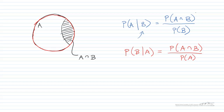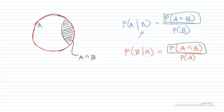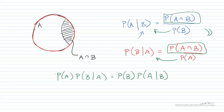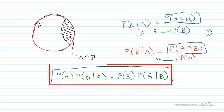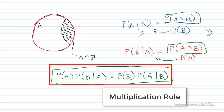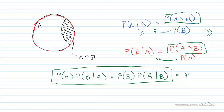Now look what happens if I isolate the intersection that's in the numerator on both right-hand sides. If I isolate those and set them equal to each other — bringing P(B) over and P(A) over — what we end up with is the multiplication rule. Both expressions are equal to the probability of the intersection, which is sometimes valuable when you're trying to find the intersection and have the other quantities.